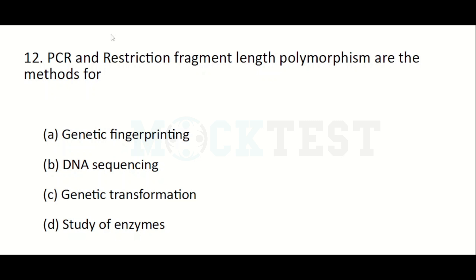PCR and restriction fragment length polymorphism are methods for: Option A: genetic fingerprinting. Option B: DNA sequencing. Option C: genetic transformation. Option D: study of enzymes. The answer is Option A, genetic fingerprinting.